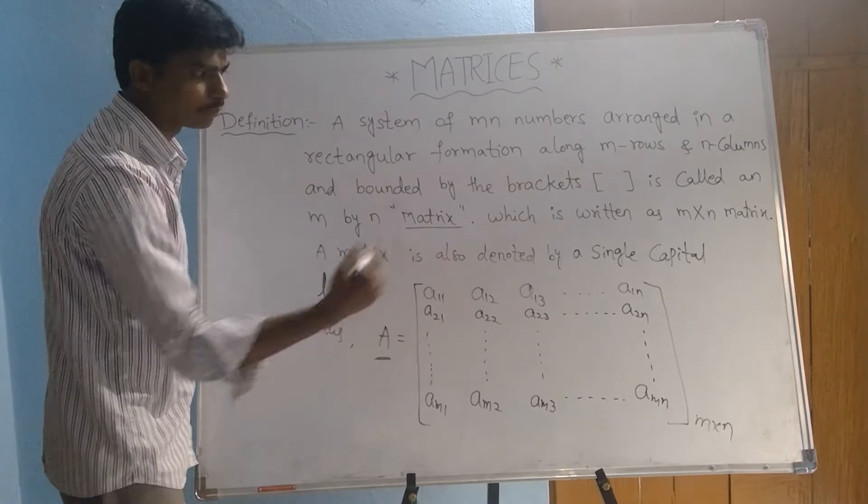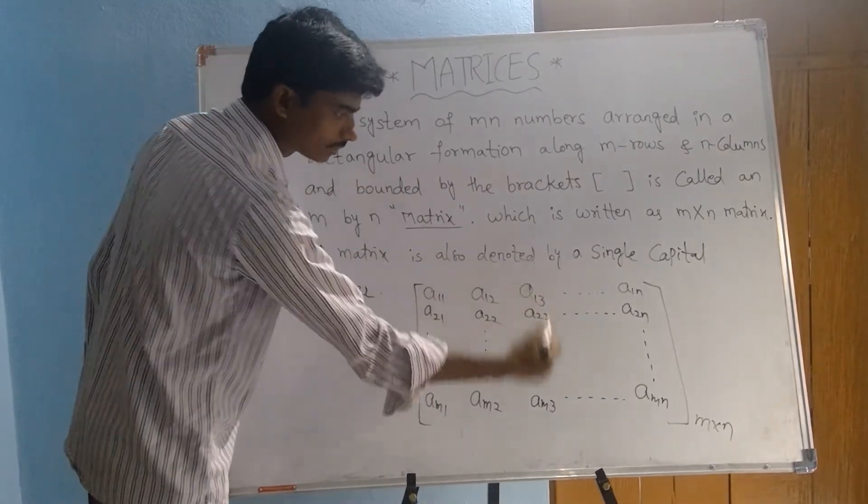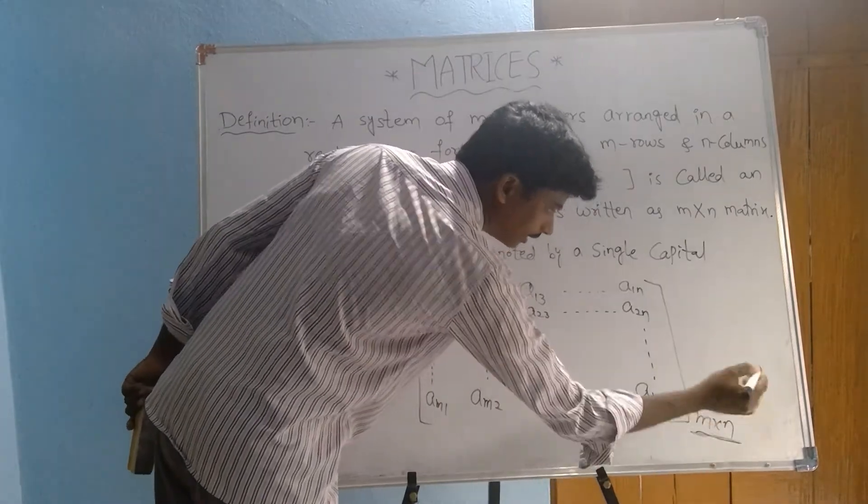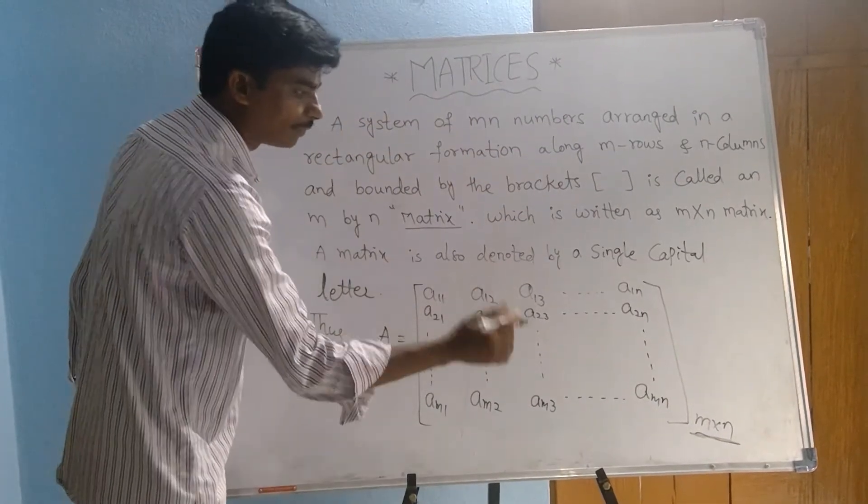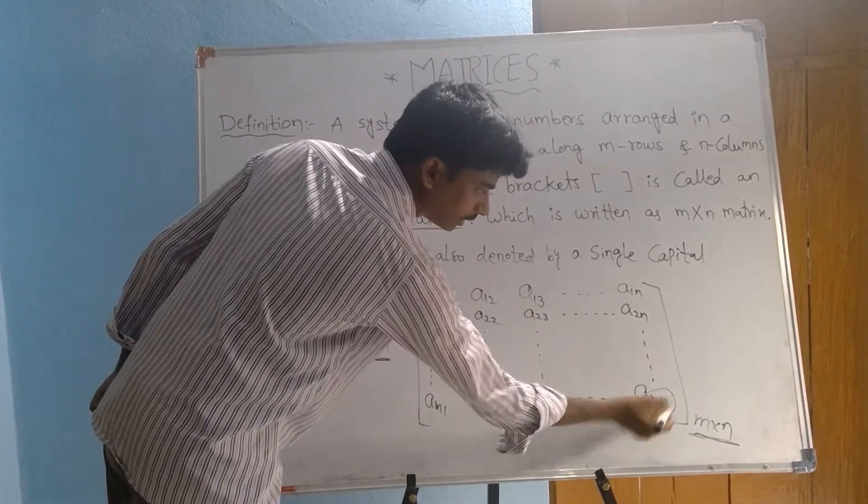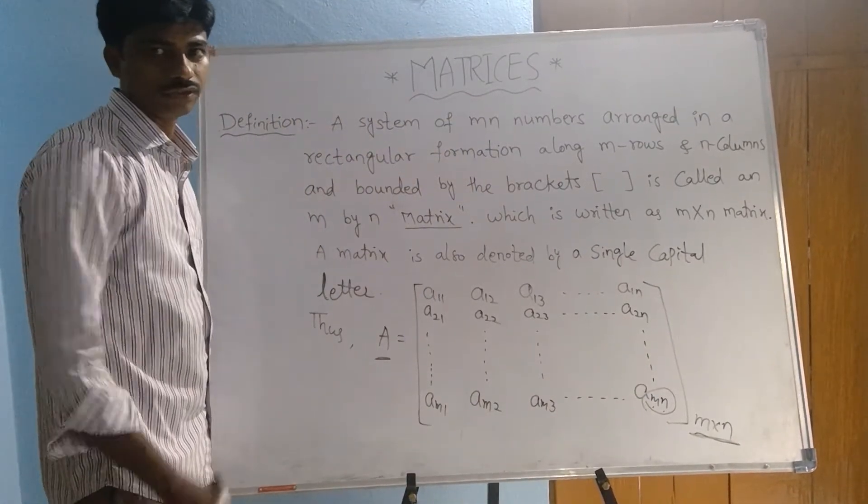Horizontal lines are rows and vertical lines are columns. This order is M by N. Order is M by N because we have to taken here M rows and N columns.